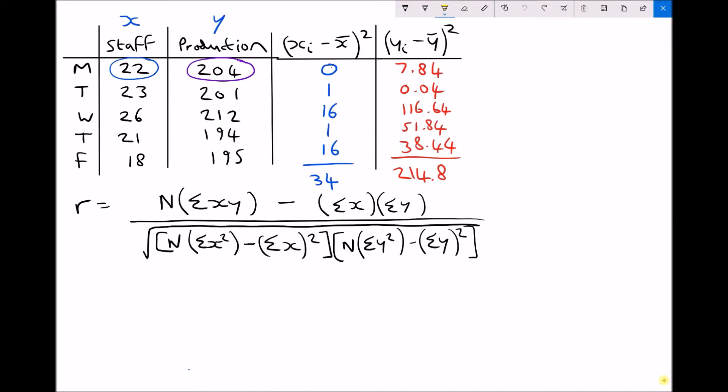First of all we have r which represents the product moment correlation coefficient. On the top of that fraction we have n which is our number of pieces of data or number of sets of data. We know that that's five. Next we have the sum of x times y. What we need is a new column where we can multiply x and y together, and all that bracket means is those x, y values multiplied together all added up. So let's do that now.